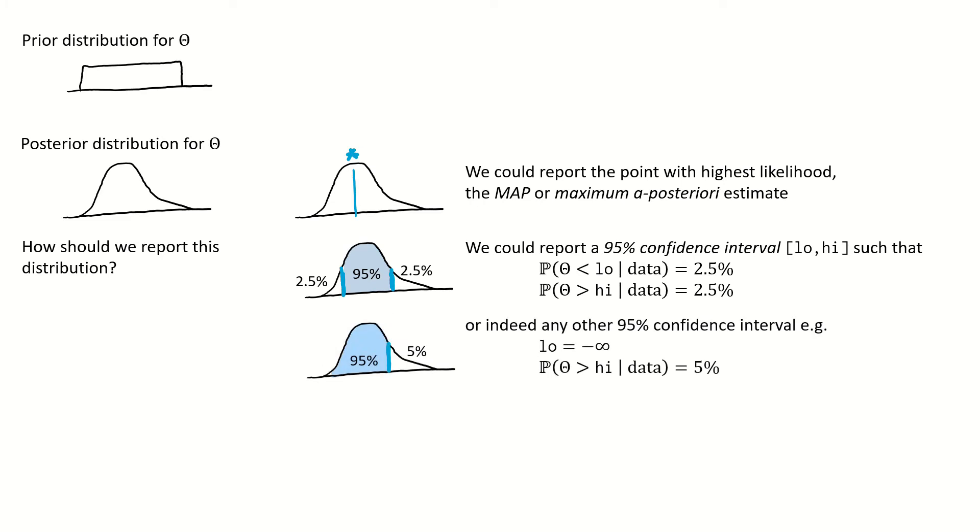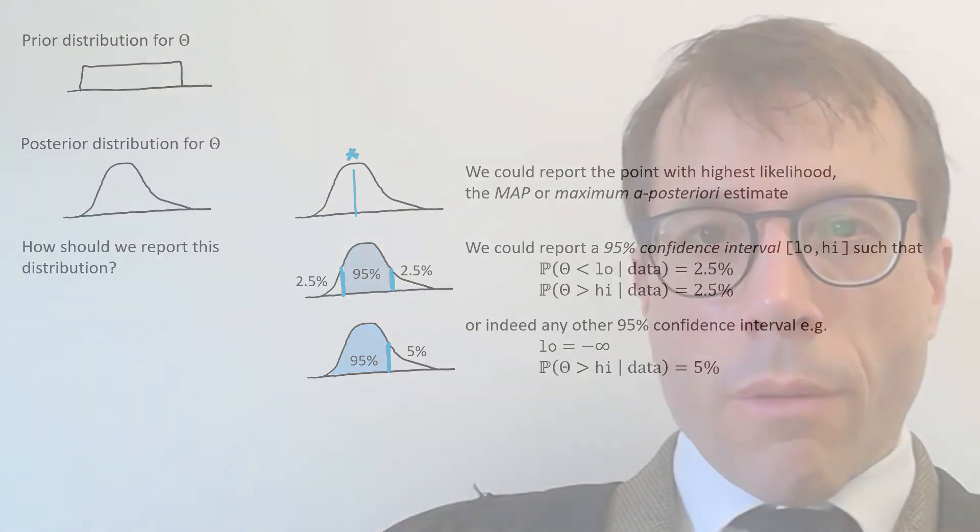It's still a bit arbitrary, and we could equally well choose a different 95% confidence interval to report. What you decide to report is up to you. You could find the narrowest 95% confidence interval you can find, for example, if you think that will be most useful to your audience.